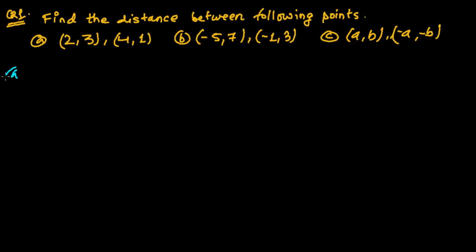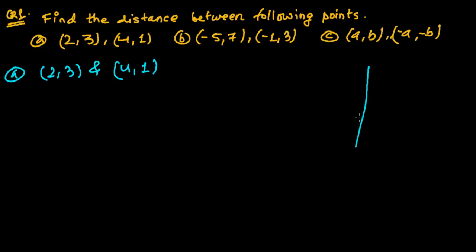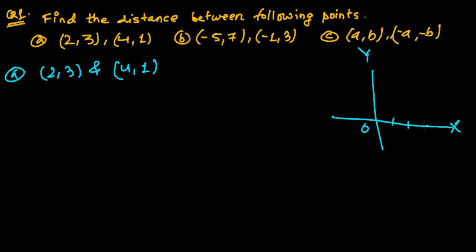Let me do the first one — the distance between (2, 3) and (4, 1). If you see on a graph, suppose this is the x-axis and this is the y-axis, this is the origin. Point (2, 3) is somewhere here, and (4, 1) is here. Suppose these are the two points P and Q. We have to find the distance between P and Q using the distance formula we recently learned.